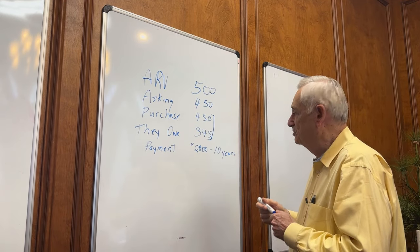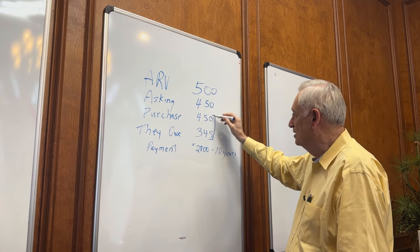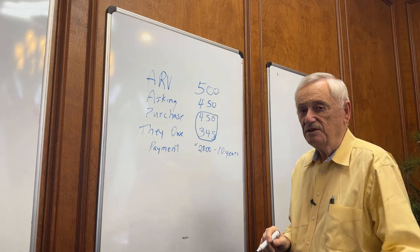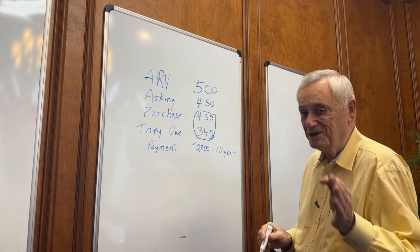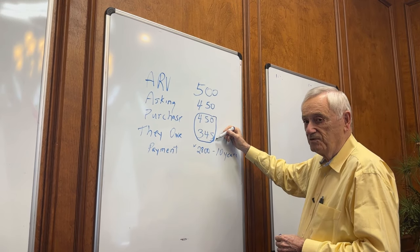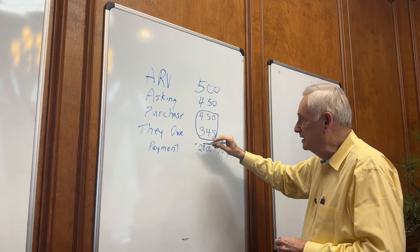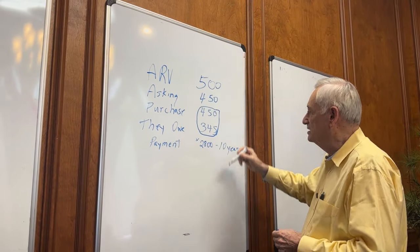I'm going to buy it on a wraparound mortgage. That means the $450,000 that I pay the seller wraps around the $345,000 that the seller owes. This is a little difficult for some folks to comprehend, so listen closely. I owe the seller $450,000, the seller owes the bank $345,000. The $450,000 wraps around the $345,000. So every time I make a payment, my principal is going to go down at the same rate the seller's principal goes down at the $345,000.